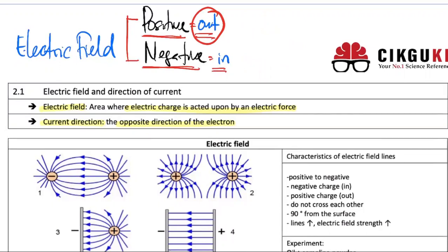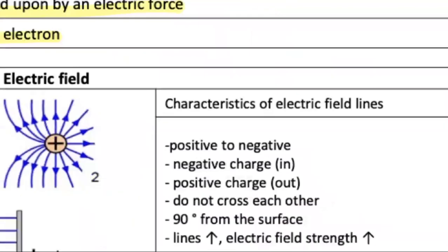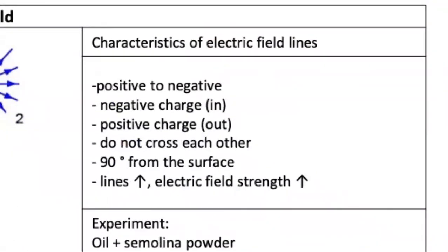For a negative particle, you draw the same eight lines, but because the particle is negative it moves in, so the arrows go inward toward the particle. That's why the negative charge field lines go in while the positive charge field lines go out — those are the characteristics of the electrical field lines.